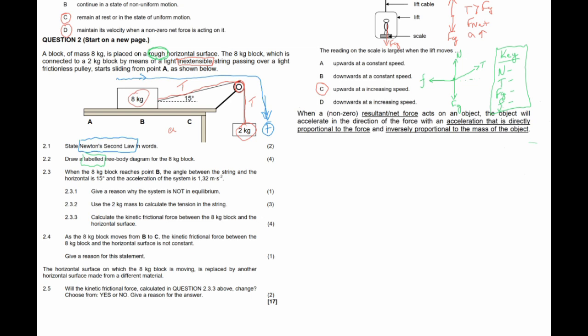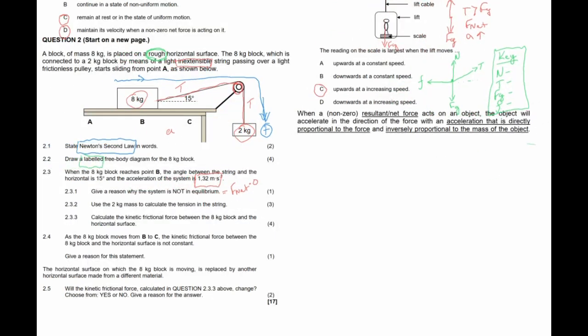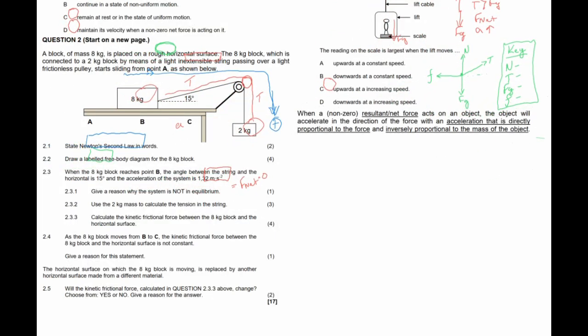Question 2.3.1 asks for a reason why the system is not in equilibrium. The system is not in equilibrium because it is accelerating at 1.32 m/s². Since it is accelerating, there must be a net force acting on the object, and equilibrium is defined by a net force equal to zero.